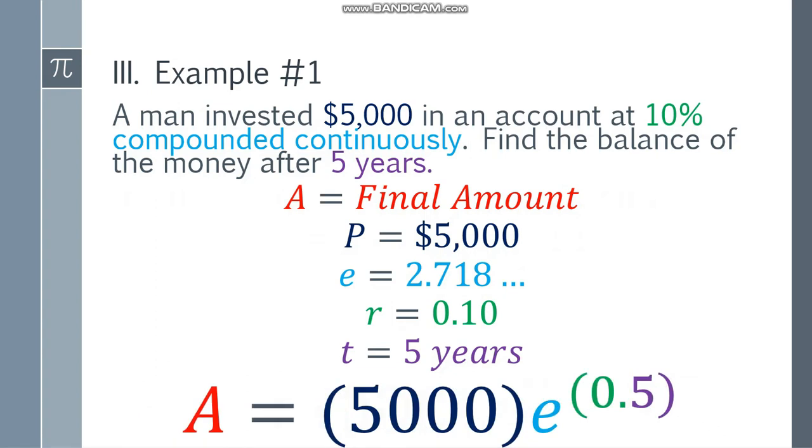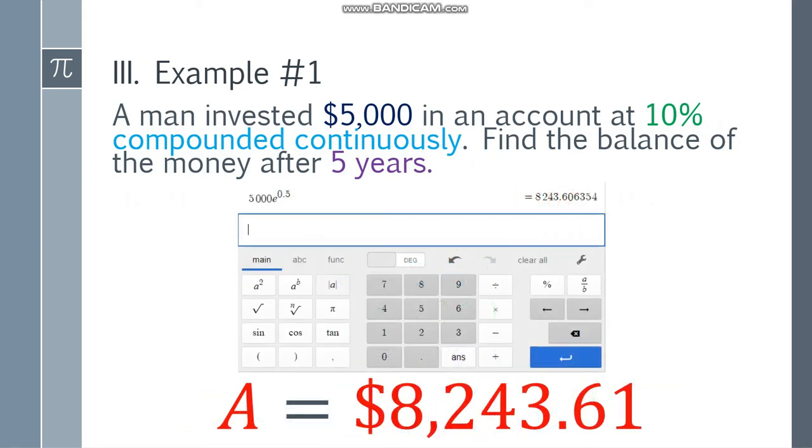Now, how are we going to do this? You need to input it in the calculator directly. In your calculator, enter E to the 0.5 power, then multiply by 5,000. And you will get this answer. Since we're talking about money, use 2 decimal points only. So that will be $8,243.61. That's the money after investing 5,000 at 10% compounded continuously for 5 years time.